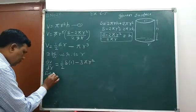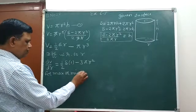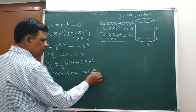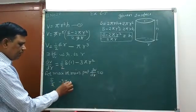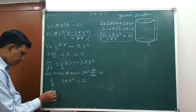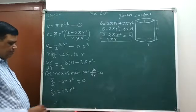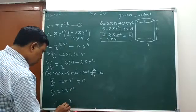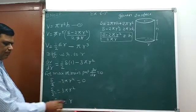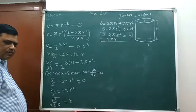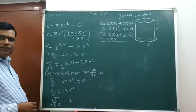Then for maximum or minimum, put dV/dr equals 0. Means S upon 2 minus 3πr² equals 0. Means S upon 2 equals 3πr². Then r² equals S upon 6π. Now r equals root of S upon 6π.